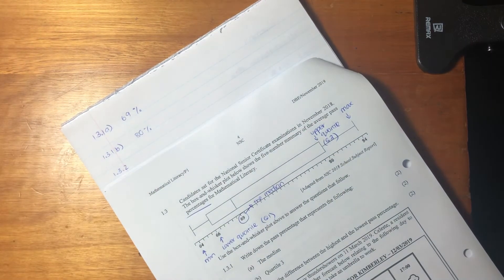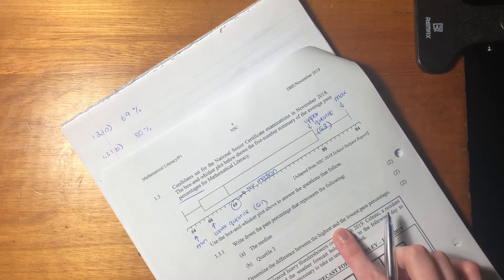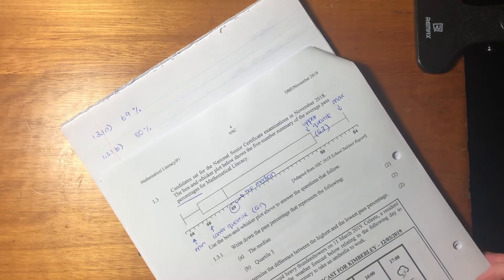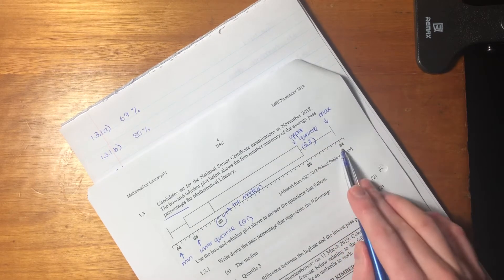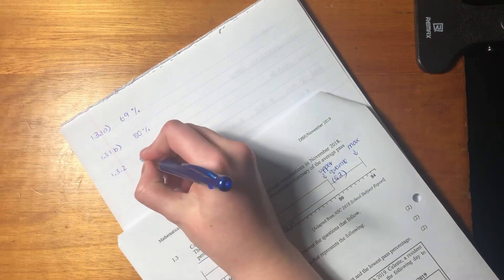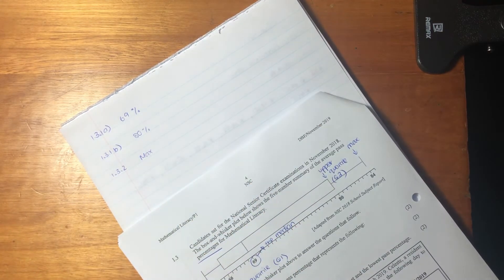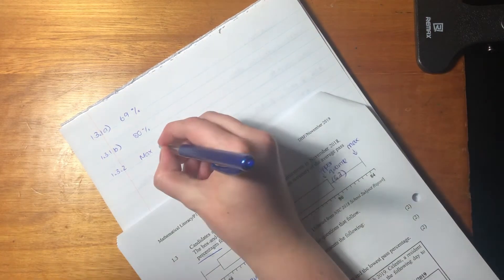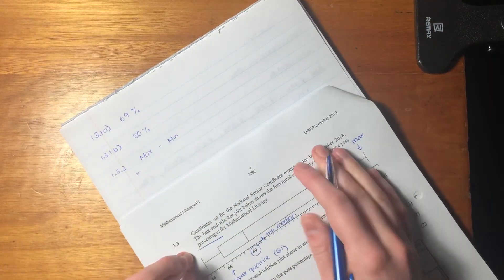Now we have 1.3.2. So it says determine the difference between the highest and lowest pass percentage. That's also not too difficult because the difference is between this max and this min. So we say here max, and by max, I mean maximum. Maximum means largest, right? Minus min. Min means smallest, right? The minimum, smallest, which equals.